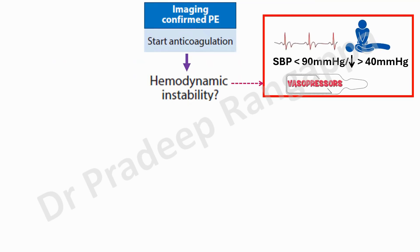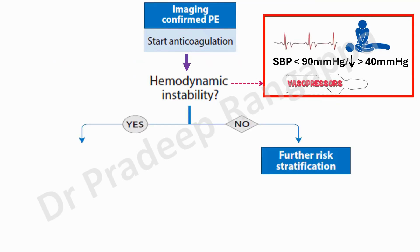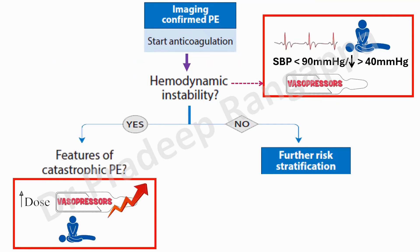If you have a confirmed PE with hemodynamic instability, you look at whether this represents catastrophic PE — meaning cascading or increasing doses of vasopressors, perpetuating hemodynamic instability, and cardiac arrest. That is where the algorithm becomes more invasive in its approach.